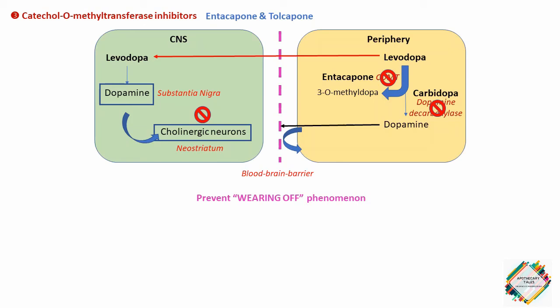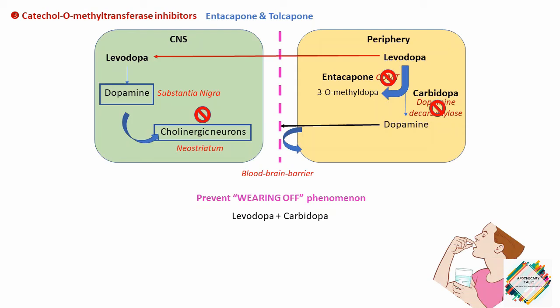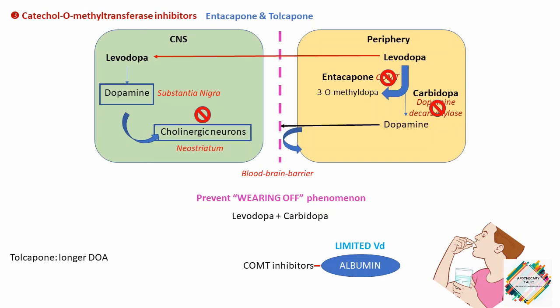Both entacapone and tolcapone reduce the symptoms of wearing-off phenomena seen in patients on levodopa and carbidopa combination. These two drugs differ primarily in their pharmacokinetic and adverse effect profiles. The oral absorption of both drugs occurs readily and is not influenced by food. They are extensively bound to plasma albumin with a limited volume of distribution. Tolcapone has a relatively longer duration of action probably due to its affinity for the enzyme compared to entacapone, which requires more frequent dosing.